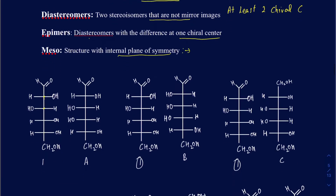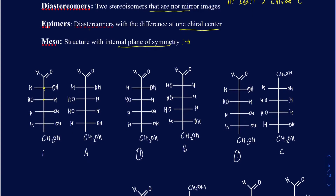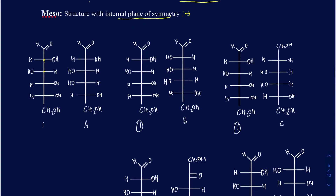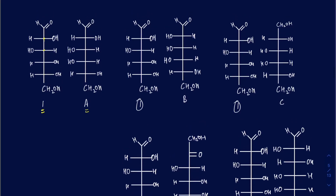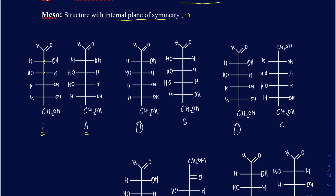Let's say I have some molecules drawn out and we're going to try to find the relation between the pairs. In this first one, I have structure 1 and structure A, and I'm trying to figure out what the relation is between those two. The easiest and the very first thing you want to check is whether they are enantiomers or not. To figure that out, just draw a mirror in between those two, and ask yourself: is structure 1 the mirror image of structure A?